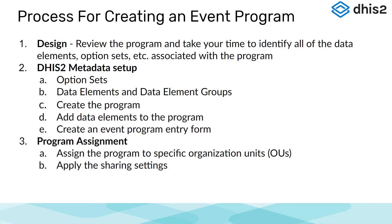Just to summarize, we will be going through the entire process identified here, using this outline to frame each step. This includes reviewing the design of our program — a step we should be familiar with from reviewing the DHIS2 event data model. Secondly, we will look at the DHIS2 metadata setup, walking through configuration steps for option sets and options, data elements and data element groups, creating the program, adding data elements to the program, and creating the program entry form. The last large step is program assignment, where we will assign our event program to organization units and apply sharing settings. Let's get started with reviewing the design of our program.